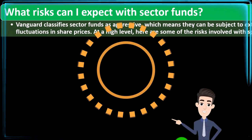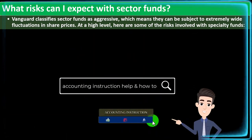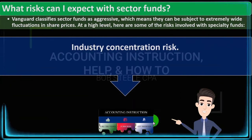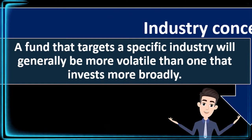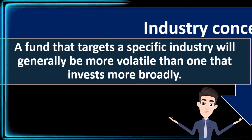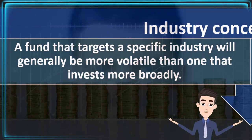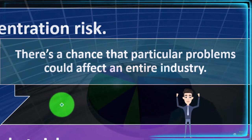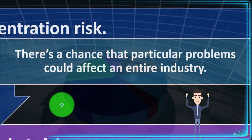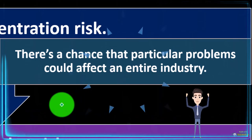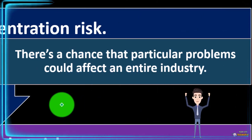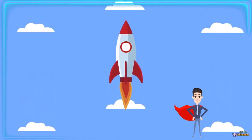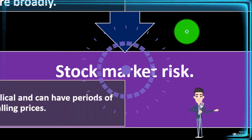Vanguard classifies sector funds as aggressive, meaning they can be subject to extremely wide fluctuations in share prices. Industry concentration risk: a fund targeting a specific industry will generally be more volatile than one that invests more broadly — you're less diversified, so more risk is typically the outcome. There's a chance that particular problems could affect an entire industry. For example, if you're invested across the whole health industry and something dramatically reduces demand for it, the whole sector could decline, while other industries remain unaffected.